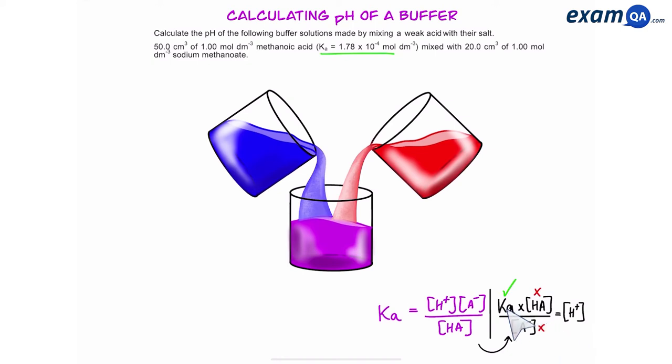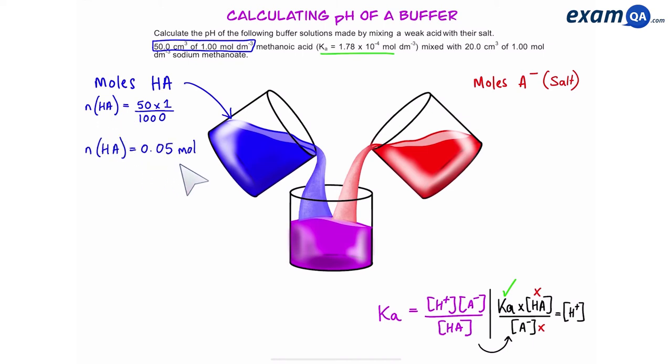We know the value for Ka however we don't know the value for the concentration of HA or A- in the purple beaker, the buffer. So what we can do is start working out their moles. Let's start with HA. So we can use the values from the question to work out the moles of HA. That gives us 0.05 moles. We can do the same for A- which is basically coming from the salt and that gives us 0.02 mole.